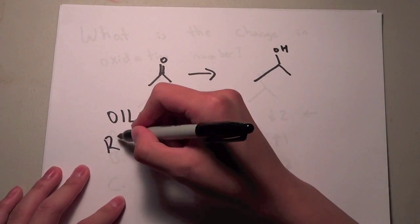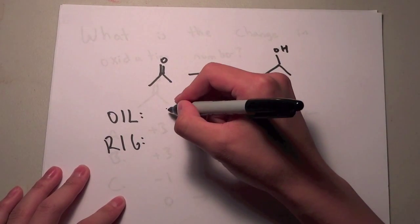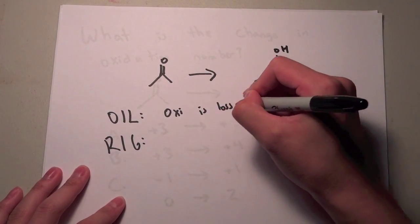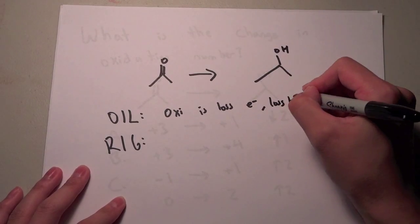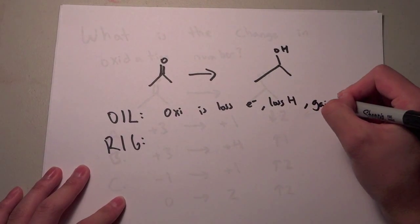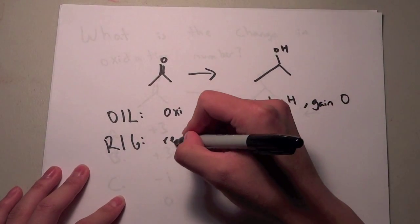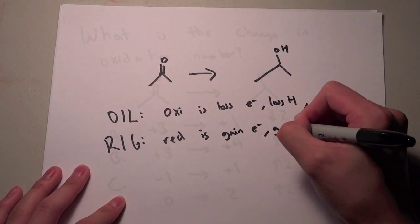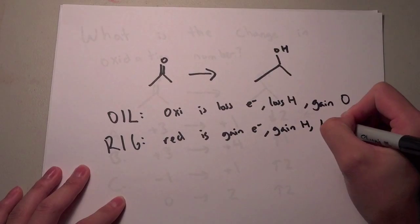OIL RIG, so oxidation is loss of electrons and also a loss of hydrogens, but it's a gain of oxygens. Reduction is a gain in electrons, a gain in hydrogens, and a loss in oxygen.